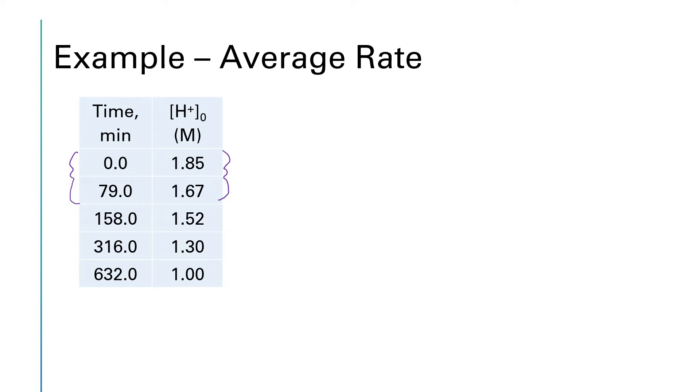All right. So what are we doing here for this first interval? To find that average rate, we're going to look at the change in the hydrogen ion concentration over the elapsed time. And we're going to set all of these up to be positive numbers. So I'm going to take the big one minus the little one. So 1.85 minus 1.67 for the hydrogen ion concentration. And for the time, we're going to do 79 minus 0.